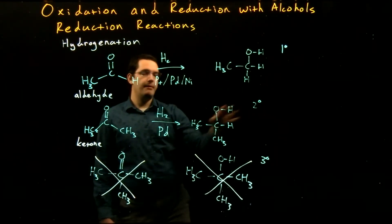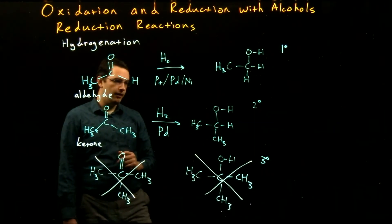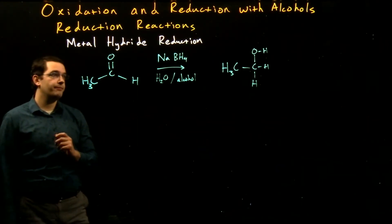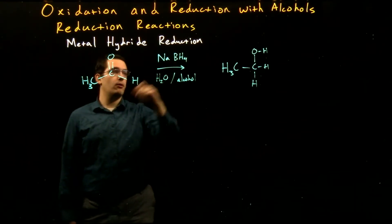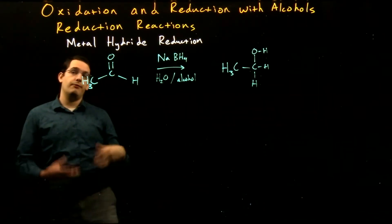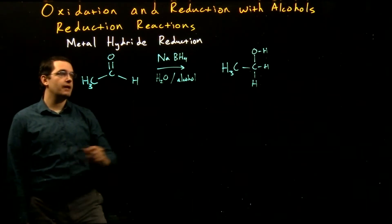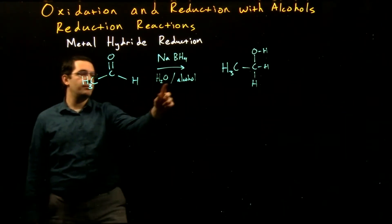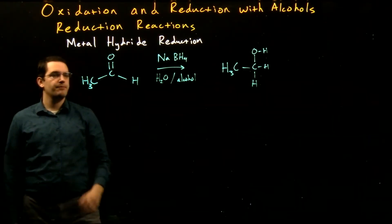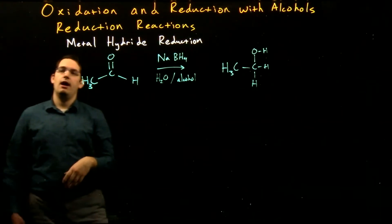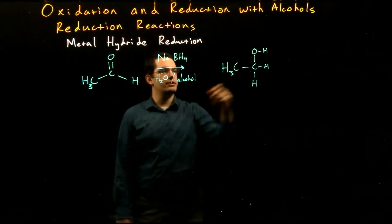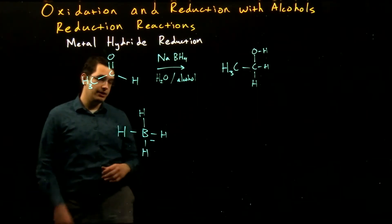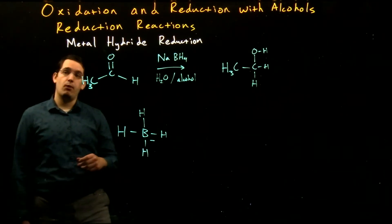So we're only going to see primary and secondary alcohols as products of our hydrogenation reaction. Our next possible reducing agent is a metal hydride — specifically sodium borohydride (NaBH4). Our boron acts as the metal and is anionic with four bonds to hydrogens; sodium acts as the counter ion. We use this in a water or alcohol-based solvent. Our overall transformation is still the same: starting from a carbonyl and adding on hydrogens to produce our alcohol.